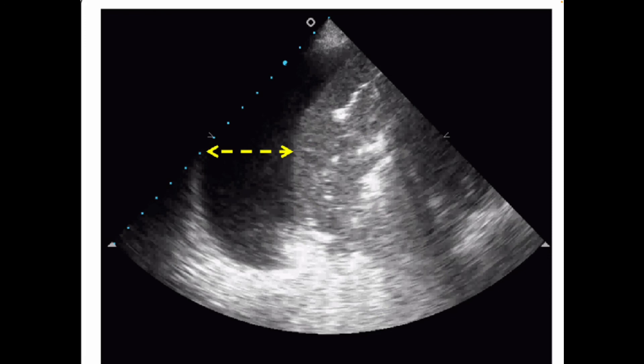The defined sonographic features of effusion are the quad sign and sinusoid sign. The quad sign refers to the usual boundaries defining pleural effusion, with anechoic fluid and posterior rib shadows as the horizontal boundaries. A doctor can also prescribe CT scan assessment.